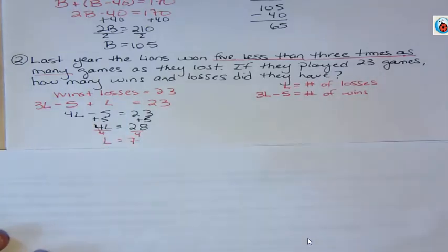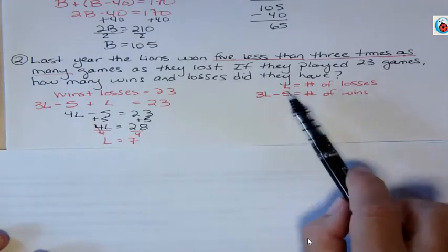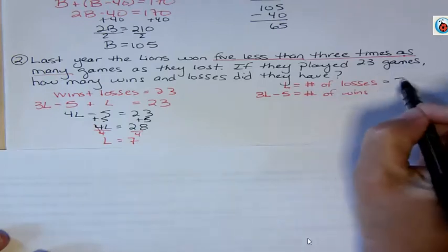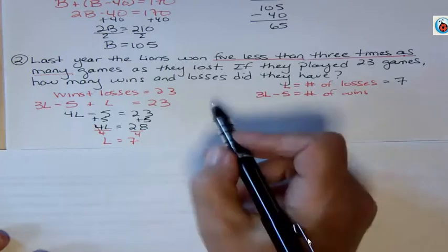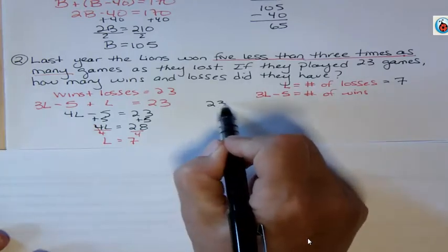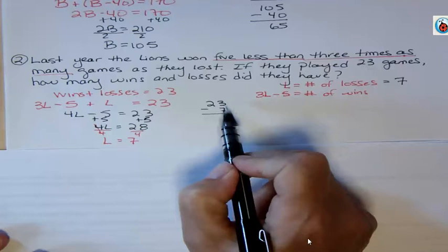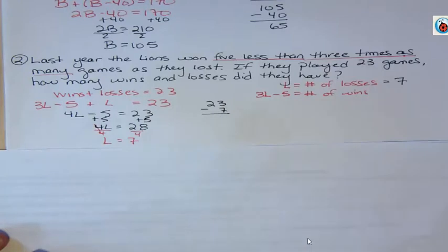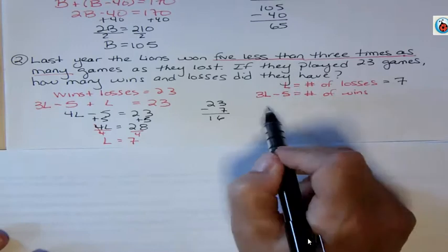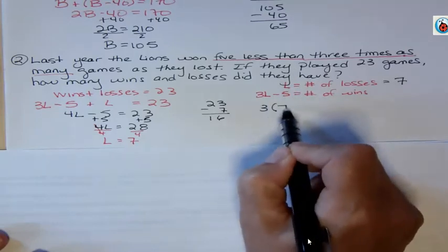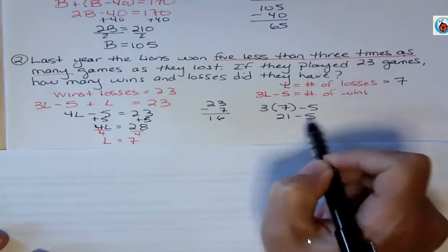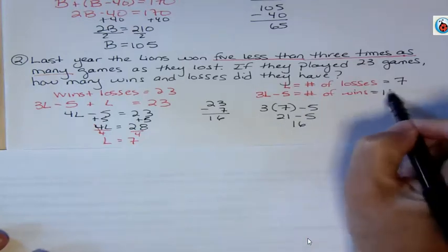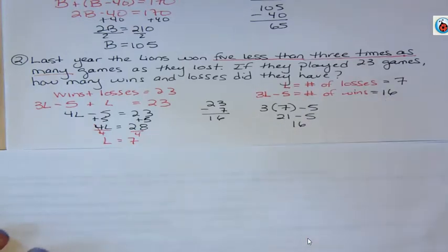What is 7? Well, 7 we said was L, the number of losses. So they lost 7 games. How many games did they win? We have a couple of ways to do this. One is you can take the 23 and subtract off that, which would be 16. But the other thing you can do is say three times 7, because three times their losses minus 5, that's 21 minus 5, which is 16. So either way you do that, we get 16 wins and 7 losses.